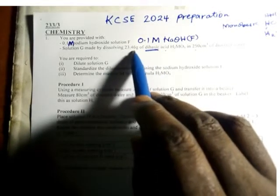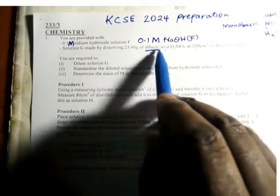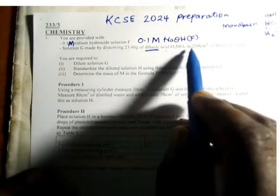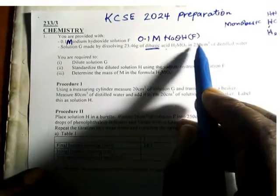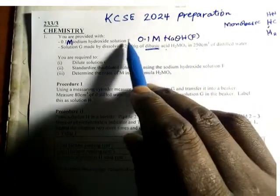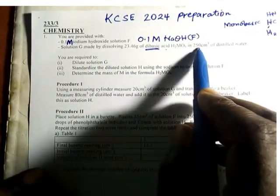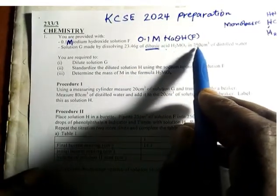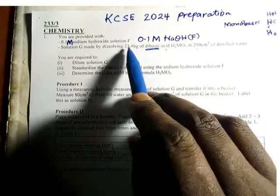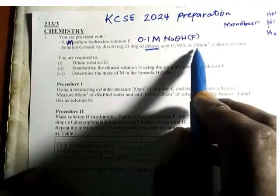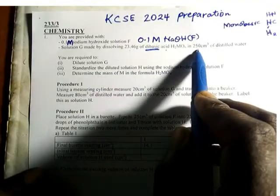23.46 grams of dibasic acid was dissolved in 250 cm³. It is very important to note that this mass is measured in 250 cm³, not in 1000 cm³.